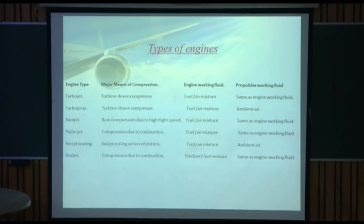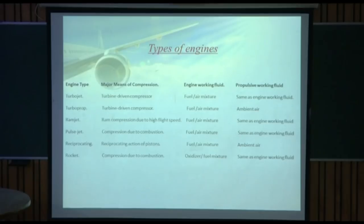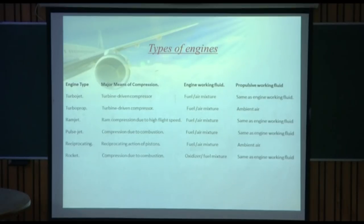There are various types of engines: turbojet, turboprop, ramjet, pulsejet, reciprocating, and rocket. In the turbojet engine, compression is by a turbine-driven compressor; the working fluid and propulsive fluid are both fuel-air mixture. In the turboprop engine, compression is also turbine-driven; the working fluid is fuel-air mixture but the propulsive working fluid is ambient air. In the ramjet engine, compression is due to ram pressure from high flight speed; working and propulsive fluid are both fuel-air mixture.